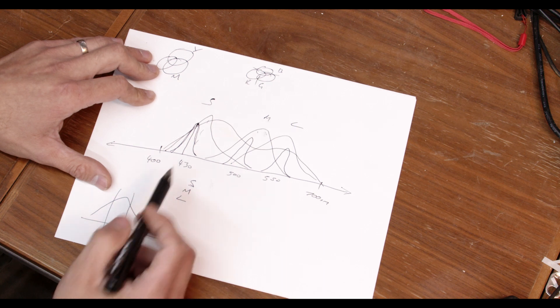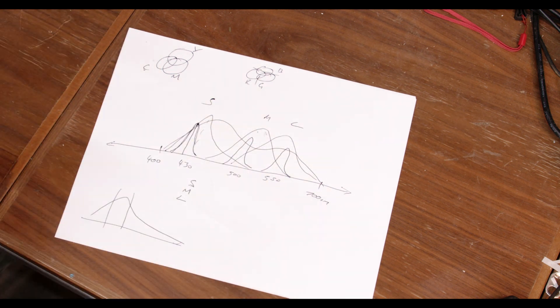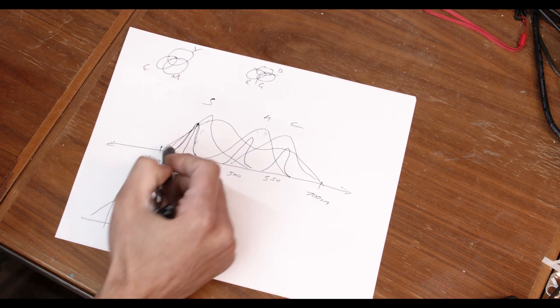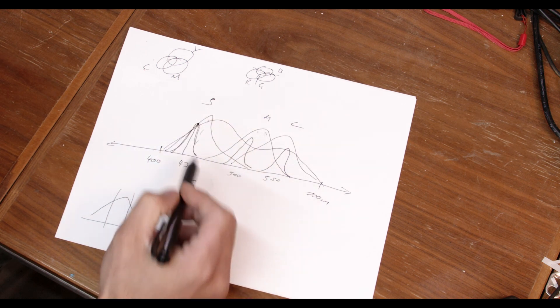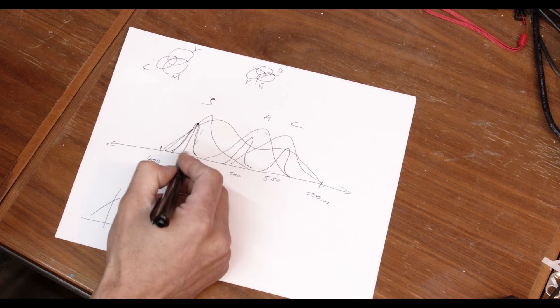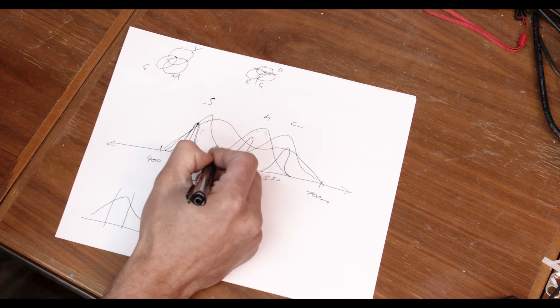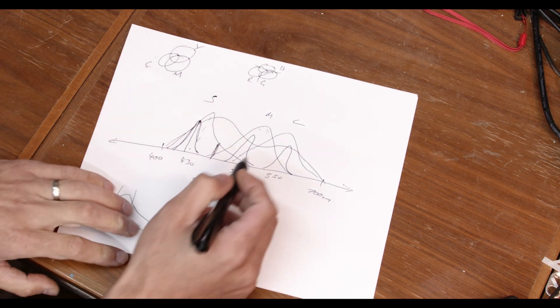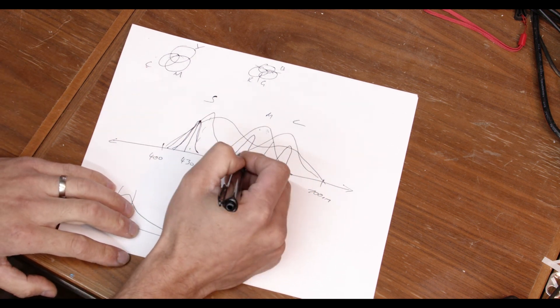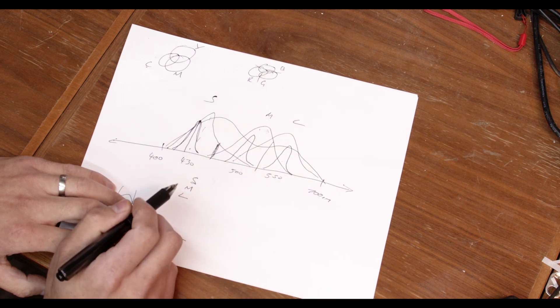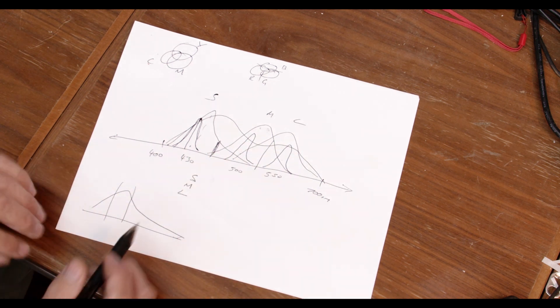Now, the way that a computer monitor can make any color, in air quotes, is by interpolating, because we know that we're doing this integration process here. If we get the ratio of this phosphor and this phosphor right, we can represent how the eye perceives this wavelength. Likewise, if we get the integration of these two phosphors right, you can get how the eye perceives, you can trick the eye into believing it sees this color.